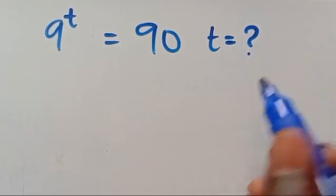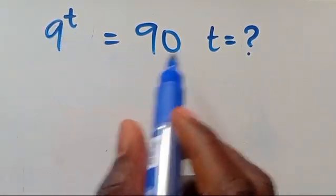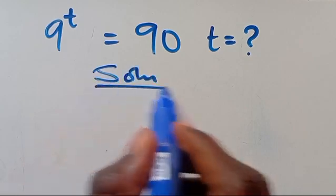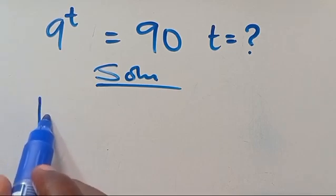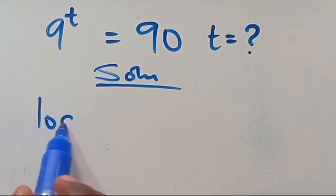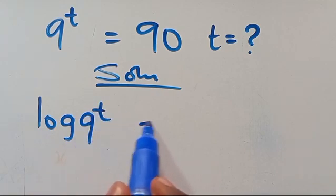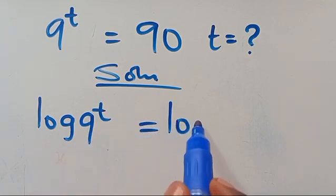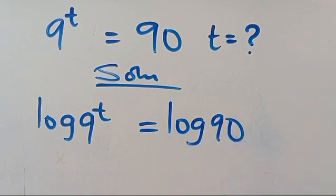Find the value of t, given that 9 to the power of t equals 9t. Let's find the solution from here. Let's introduce log to both sides, so we have log of 9 to the power of t equals log of 9t.